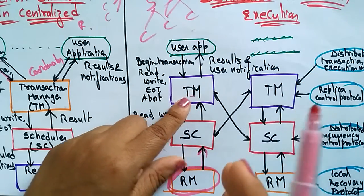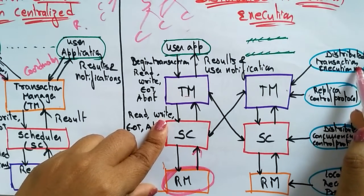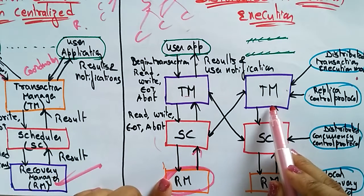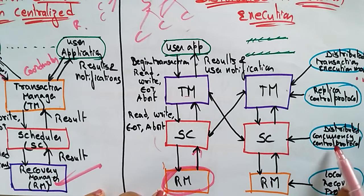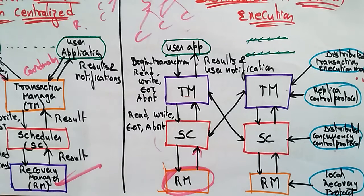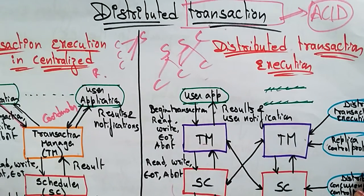Every system in the distributed environment maintains the distributed transaction execution model and replica control model. The transaction manager holds the distributed transaction execution model and replica control model, the scheduler holds the distributed concurrency control protocol, and the recovery manager holds the local recovery protocol. This is how transaction execution takes place in both the centralized and distributed environments.